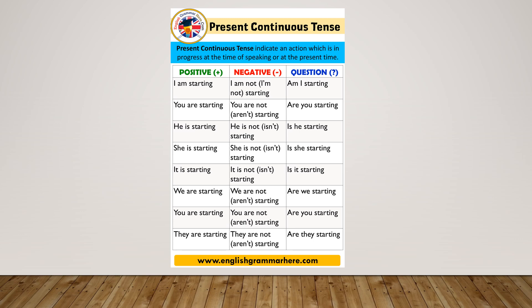The next positive sentence is 'You are starting' and its negative is 'You are not starting.' Next example: 'They are starting' — the negative is 'They are not starting.' So we see that a negative sentence can be formed in present continuous tense by the formula: Subject + is/are/am + not + present participle (verb in -ing form).